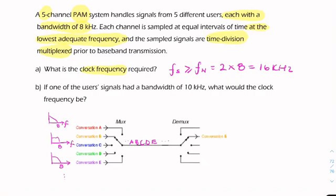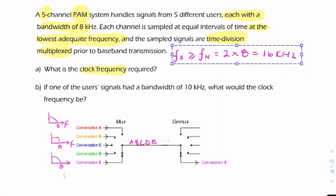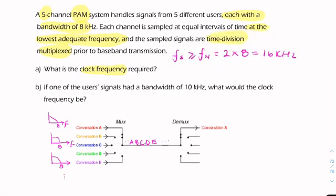So the clock frequency will need to be five times higher than that sampling frequency. So the frequency of the clock will be equal to five times the sample rate. So five times 16 is 80 kHz.